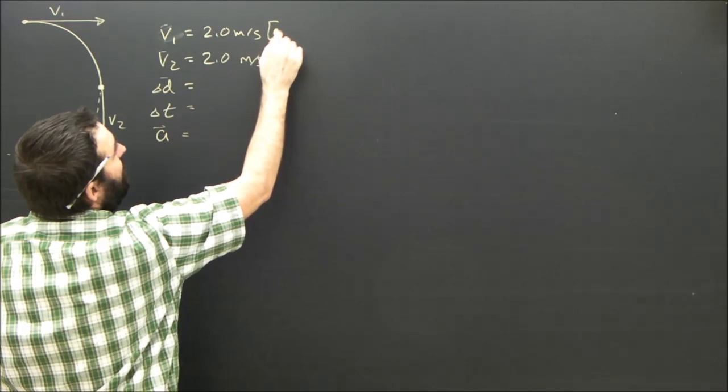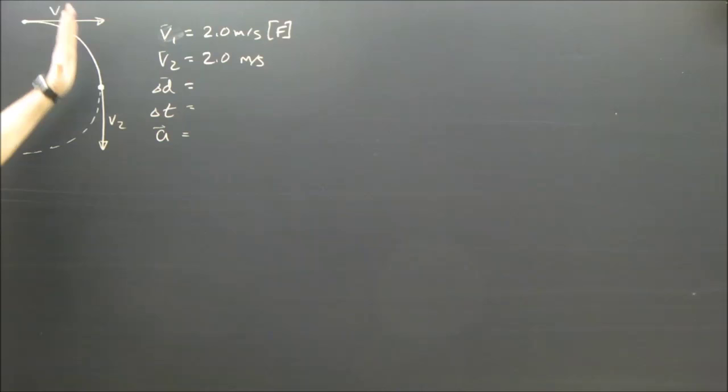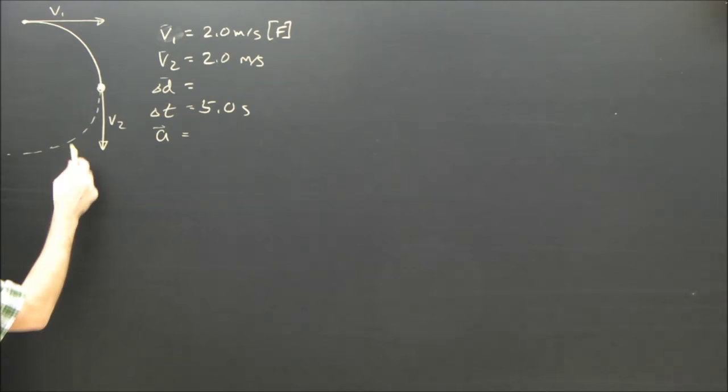The initial speed is 2 meters per second in what direction? Should we just call it forward? If we knew, we could say east. It's important though, if you call that east, to realize that V2 is not south. As the Ferris wheel goes in a circle, 5 seconds later, so the time is 5 seconds, the person is going straight down. So V2 will be 2.0 meters per second down.